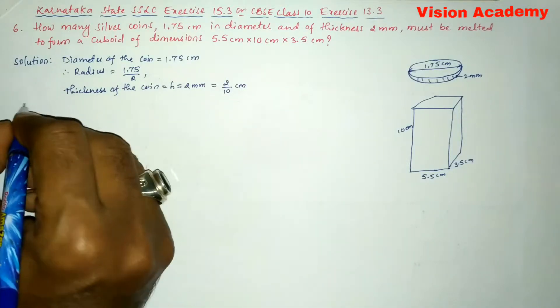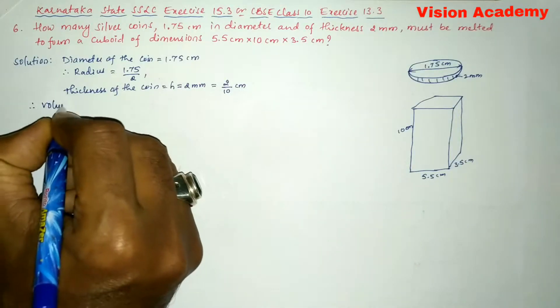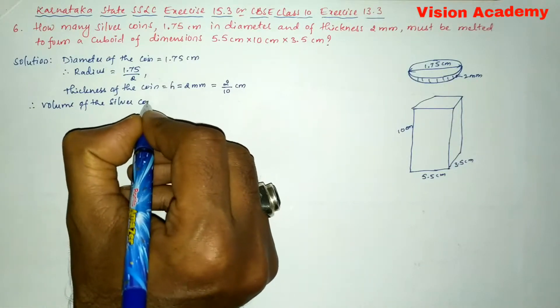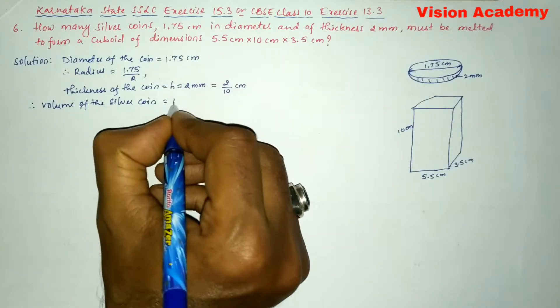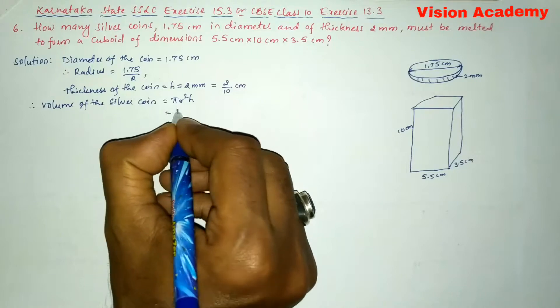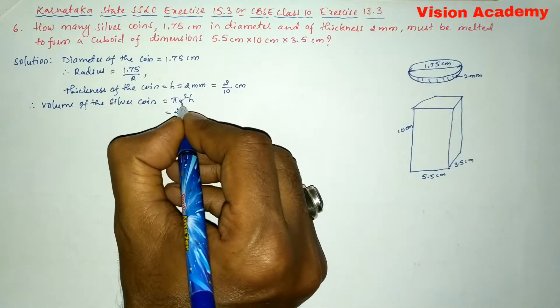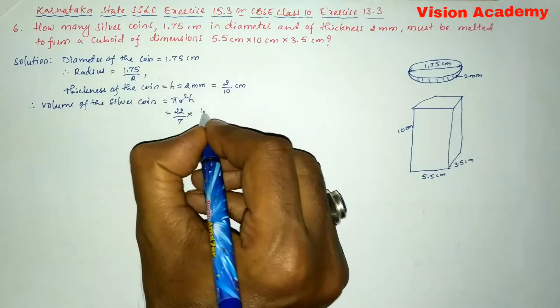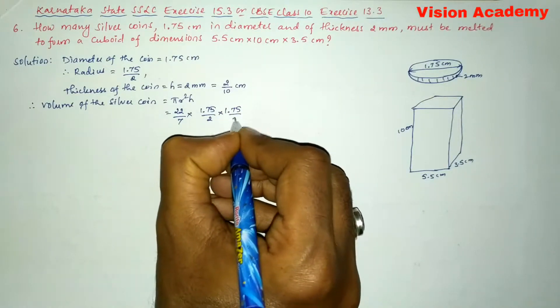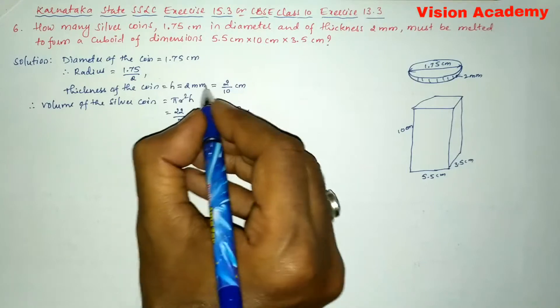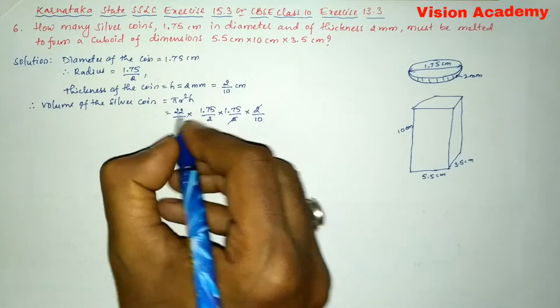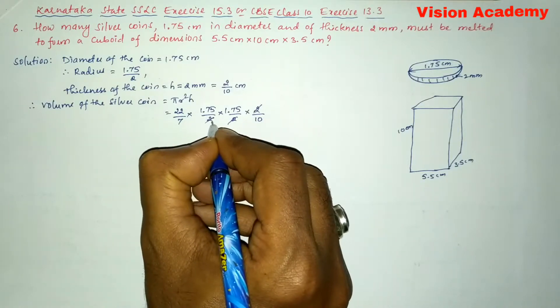Now we will write, therefore volume of the silver coin is equal to πr²h. Let us substitute the values: 22/7 × (1.75 divided by 2)² × h is 2/10. So this 2 and this 2 will get cancelled.